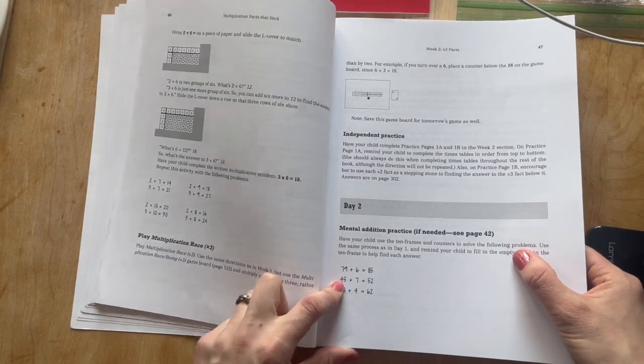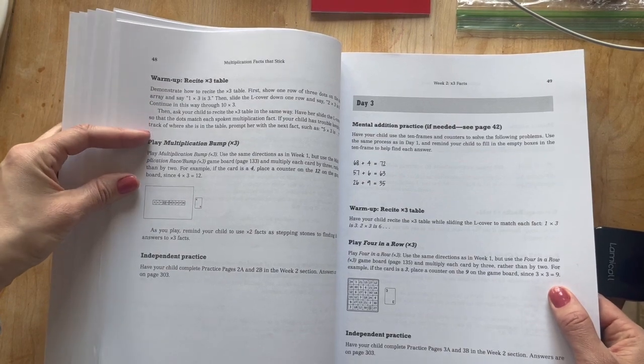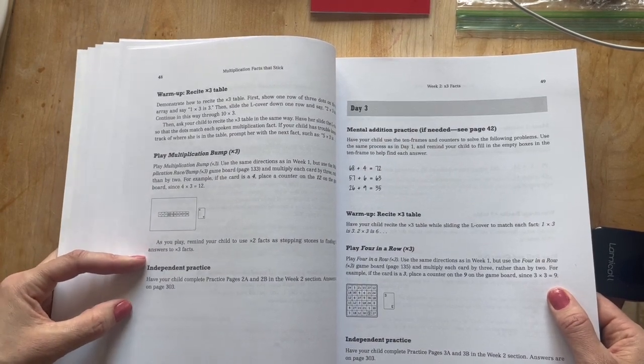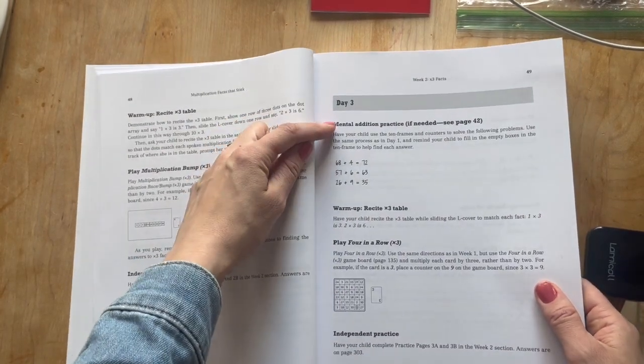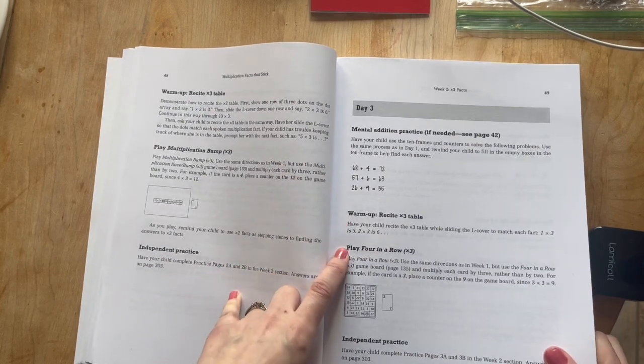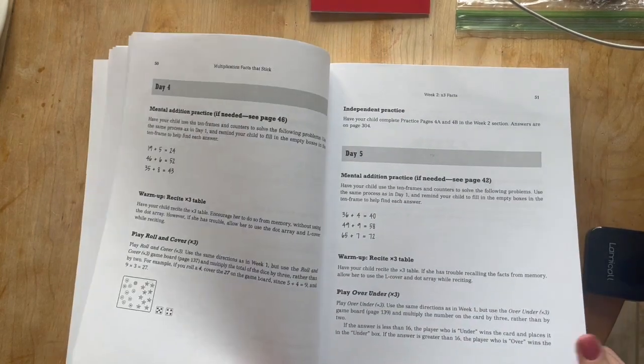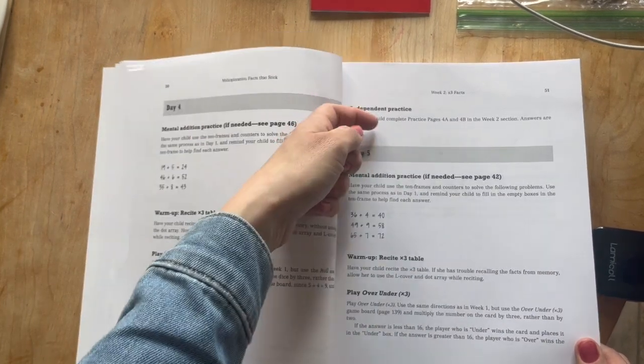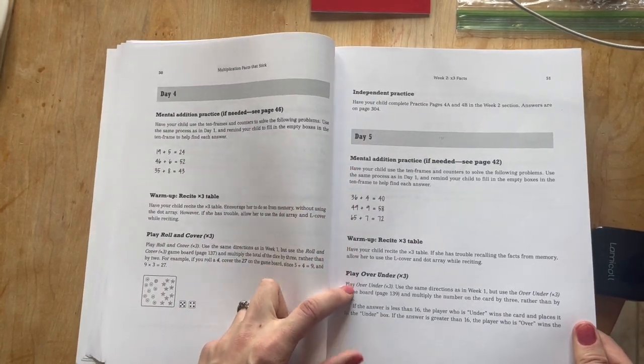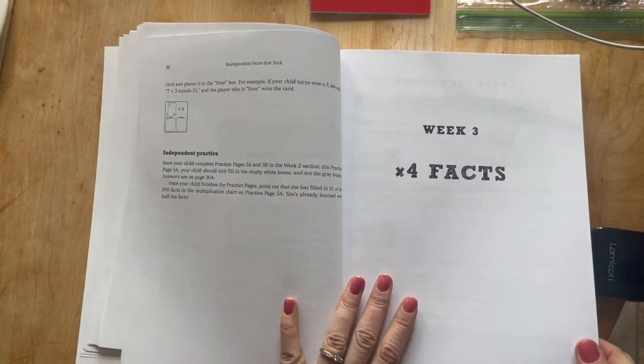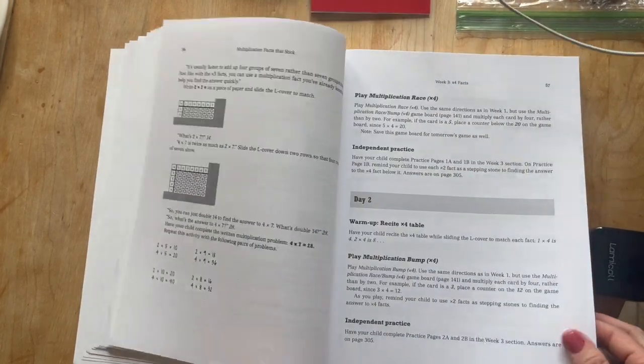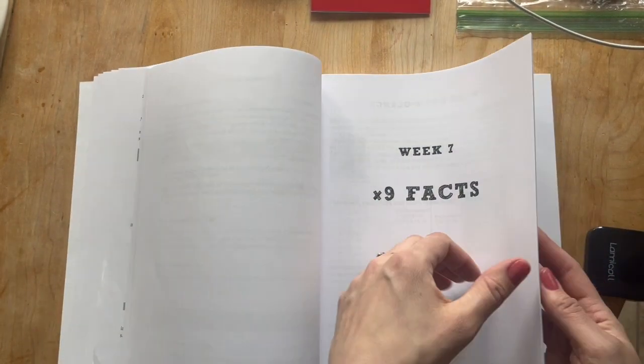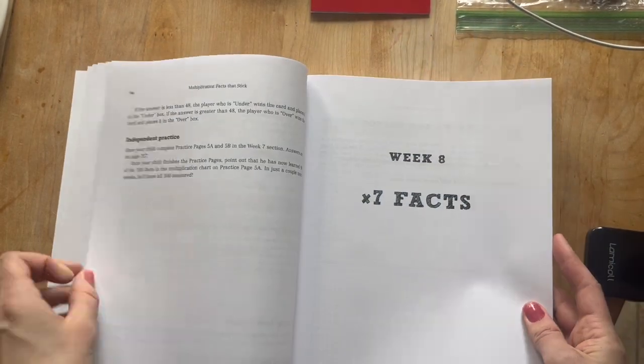Day two, mental addition practice if needed. The warm-up, recite the times three tables. So one times three, two times three, three times three. Play multiplication bump game and independent practice worksheet. Done for the day. Day three, mental addition practice if needed. You're reciting the times three tables, playing your game four in a row, and then the worksheet. Day four, mental addition practice if needed. Warm-up with the times three tables, play roll and cover, the board game, and the worksheet. Day five, kind of same thing, warm-up and game and worksheet. So it's going to follow that same exact pattern for you, times nine facts, times seven facts. Hope that helped you.